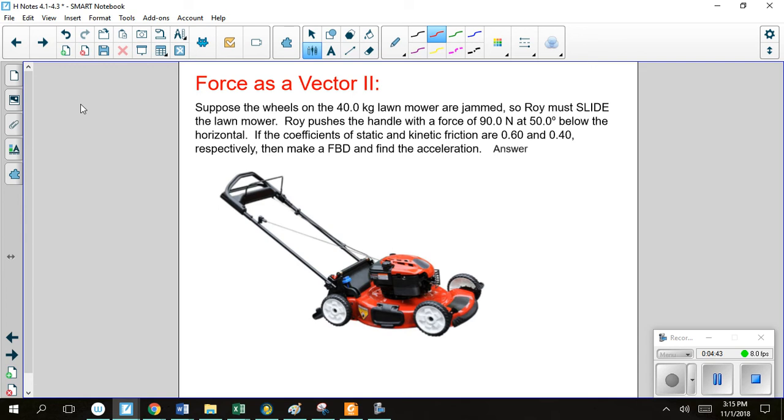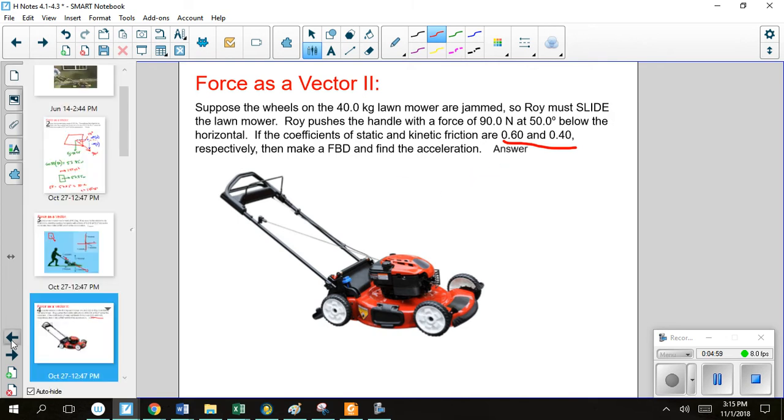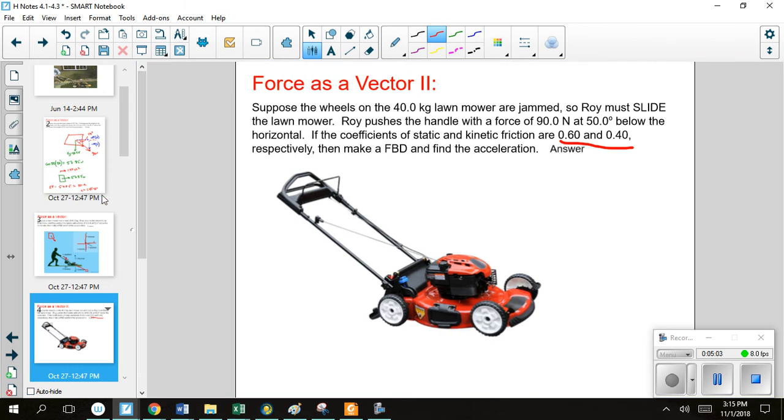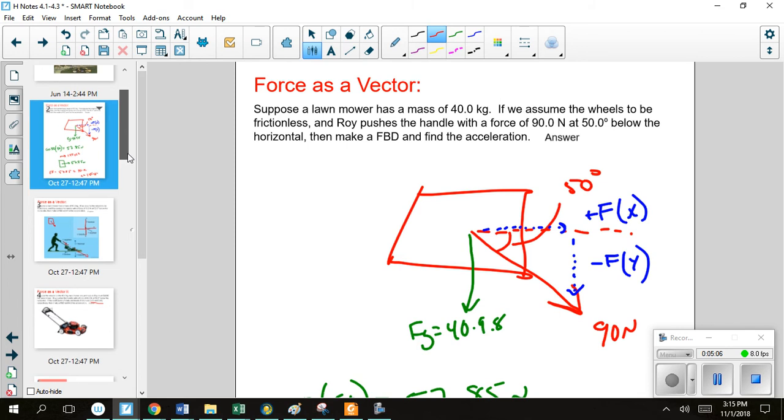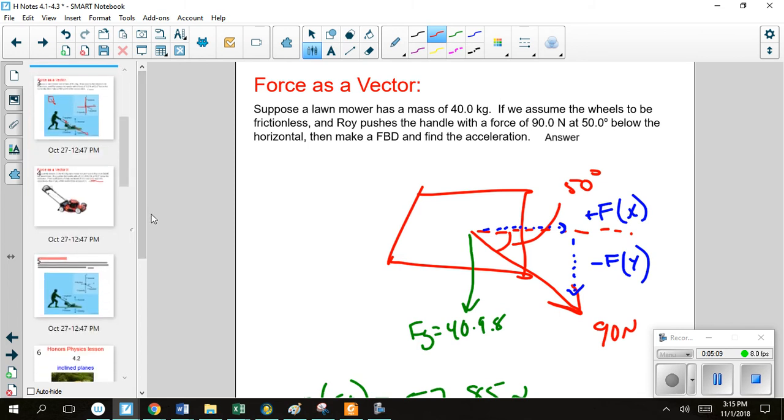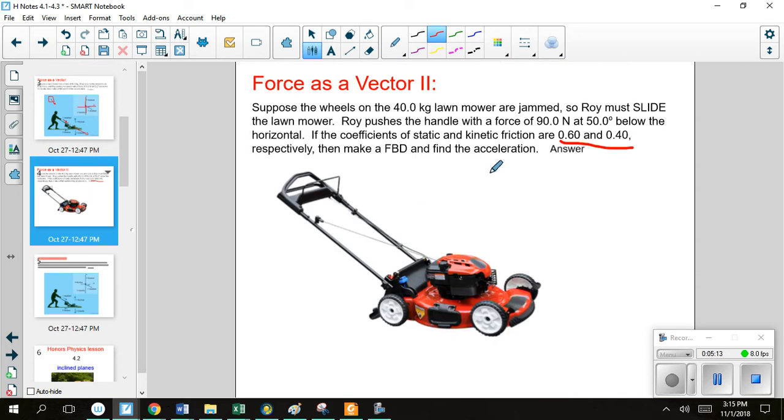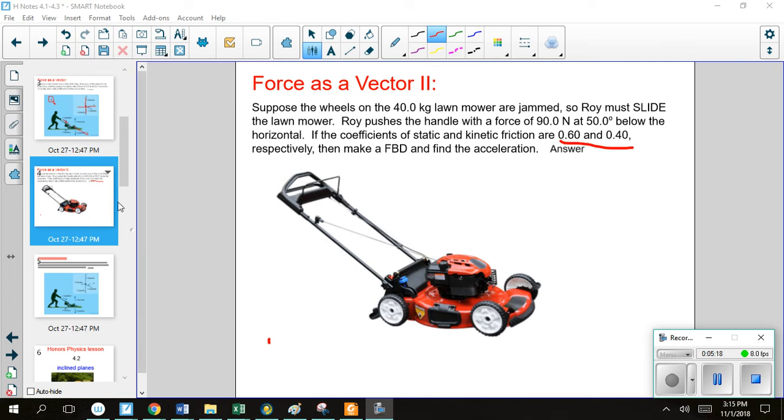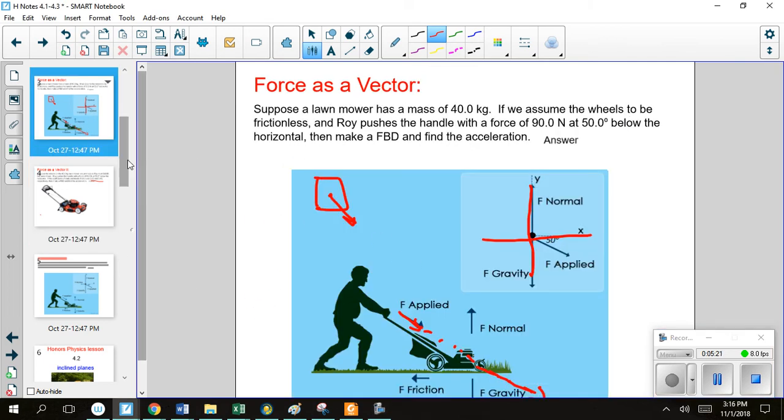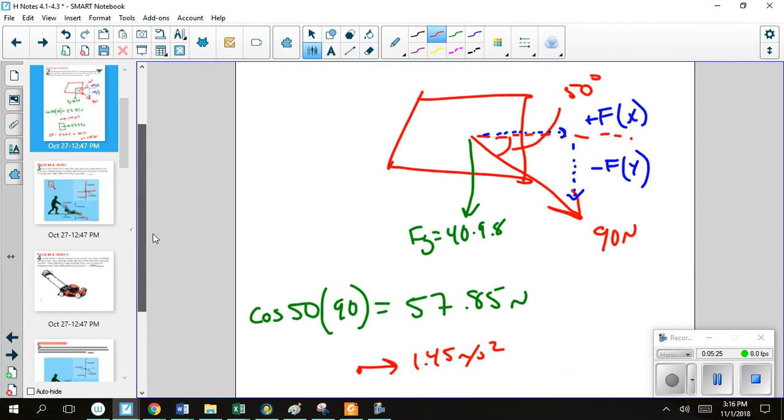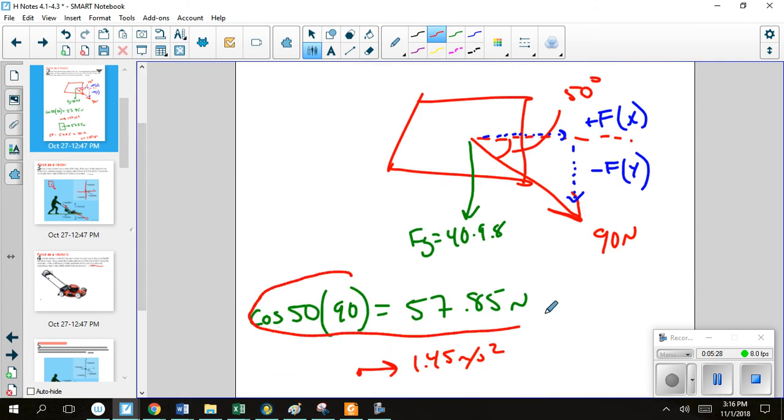Now let's take that same problem, same lawnmower, only now let's make it a friction full problem, full of friction. So we have kinetic and static friction over here. And we're going to see what happens now that we have to deal with this. So since it's the same problem, 40 kilograms, 90 newtons of force, the only thing that we're adding in here now is friction. I'm going to use some of that information that we had from before. So when you use some of this information that we had from before, specifically our x component over here.